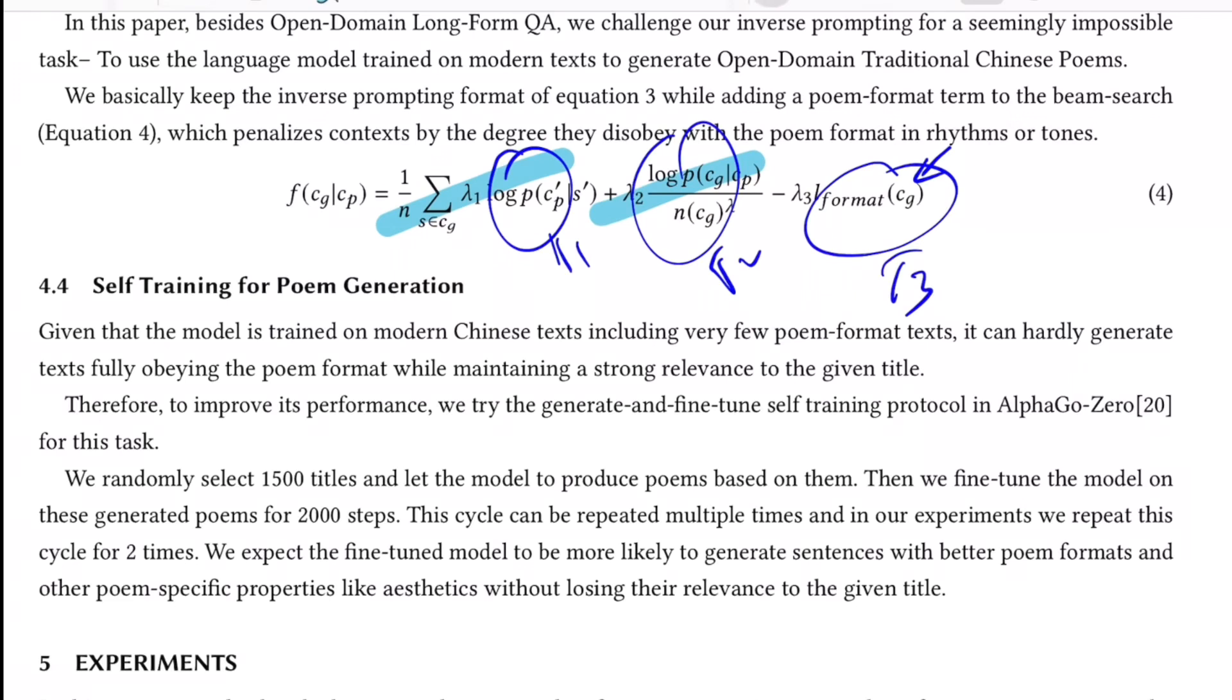Lastly, they talk about self training for poem generation. They say since they were using modern Chinese text and had very few poem formatted texts, it becomes hard for the model to know what kind of formatting schemes in terms of tone and repetitiveness to produce at the first place. So they employ the self training strategy, which means they randomly select 1500 titles, they produce poems out of them, and then they fine tune the same model again with the poems that you have generated for certain number of steps. So now the idea is if you do this step multiple times, your base model will also learn the nuances of how the poem is written in terms of its formatting. It's kind of fine tuning it for the sub task, which is poem generation.